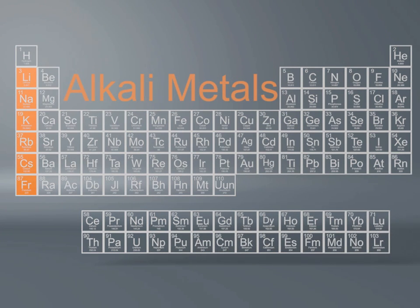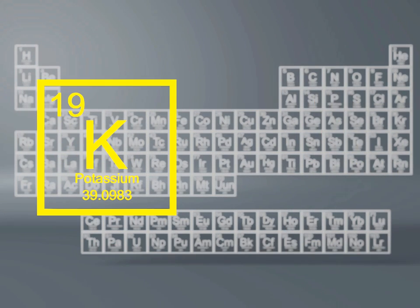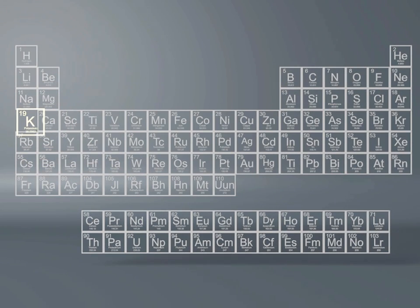The alkali metals, found in group 1 of the periodic table, are some of the most important elements needed for survival. Potassium, for example, is an alkali metal. Bananas are a great source of potassium, which is needed so that your body can function properly.